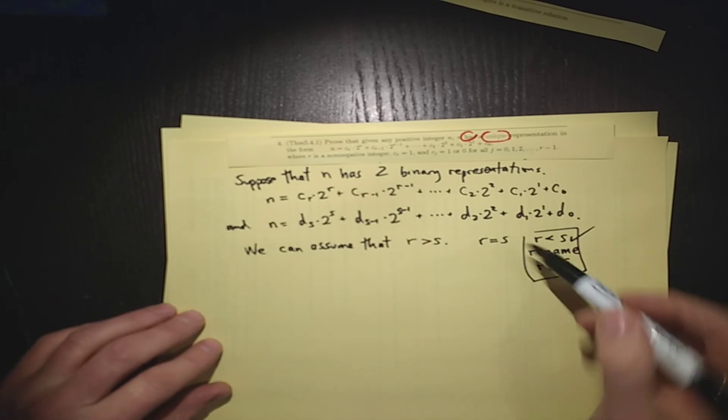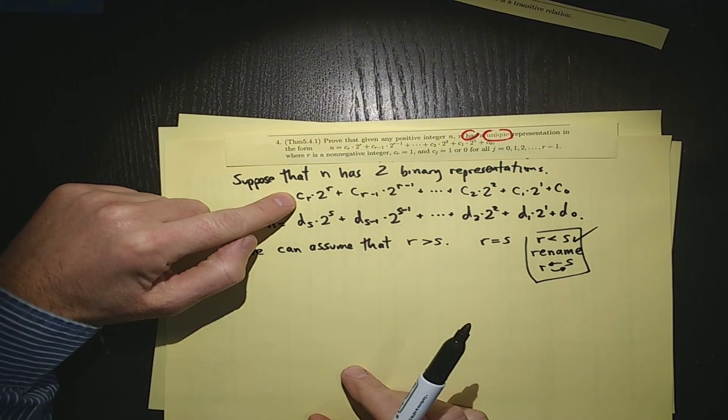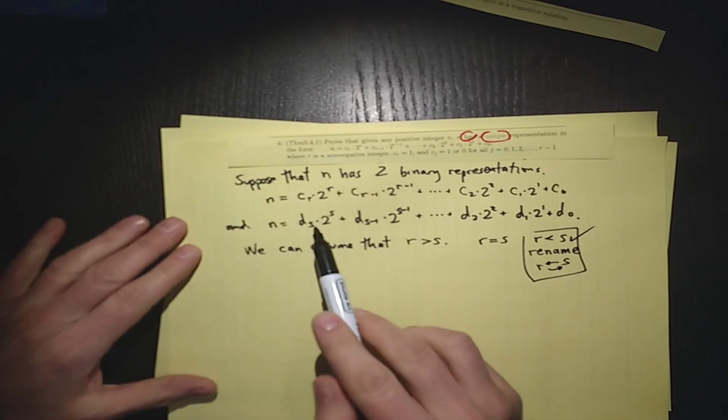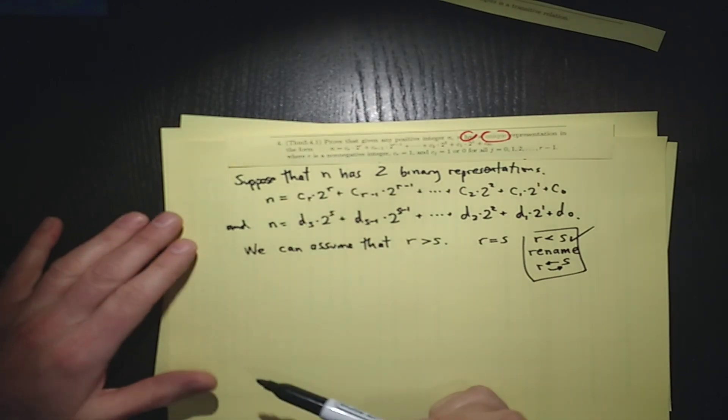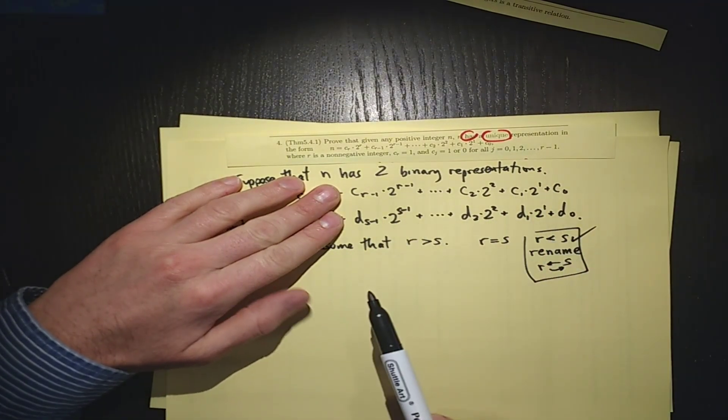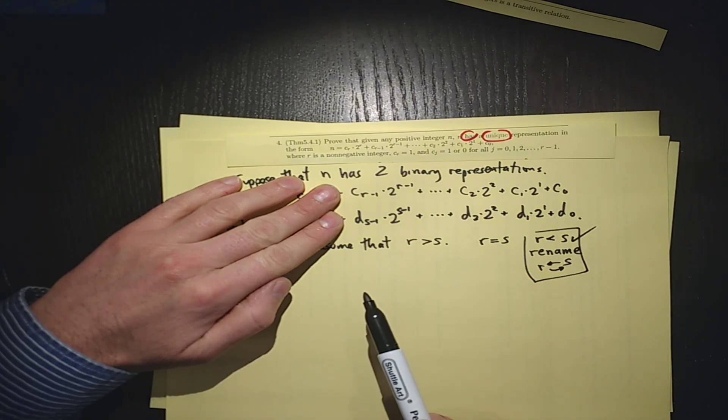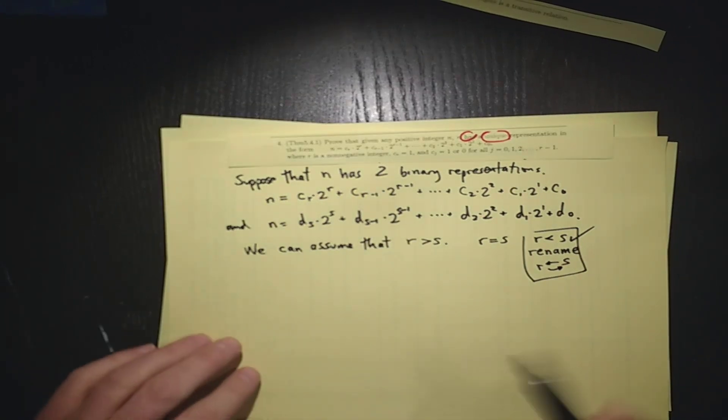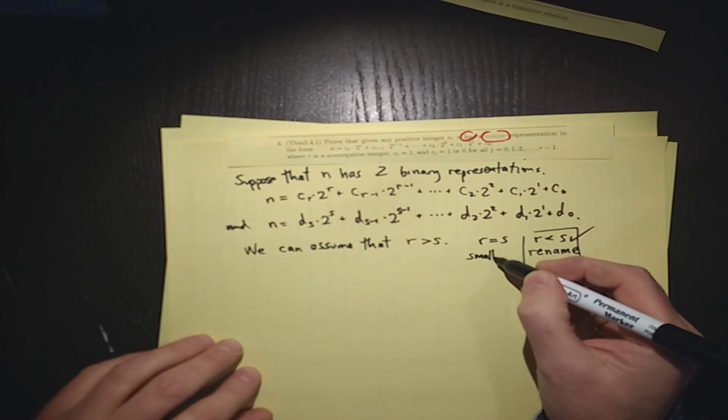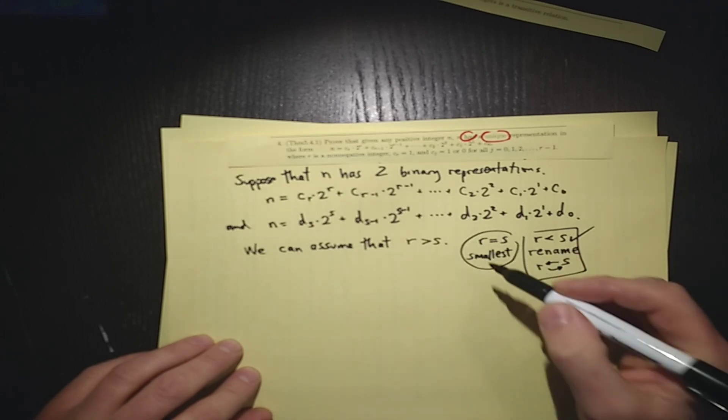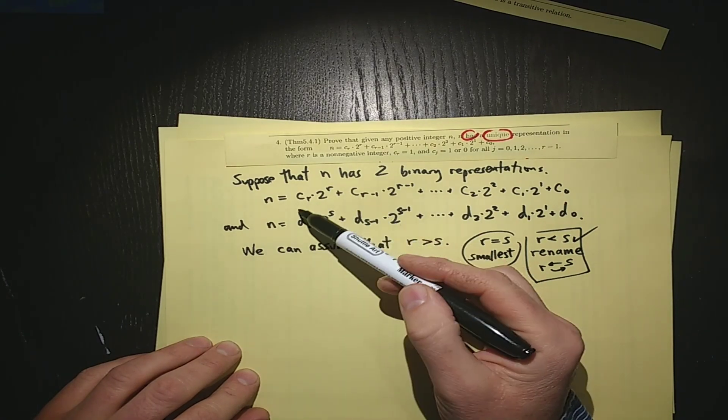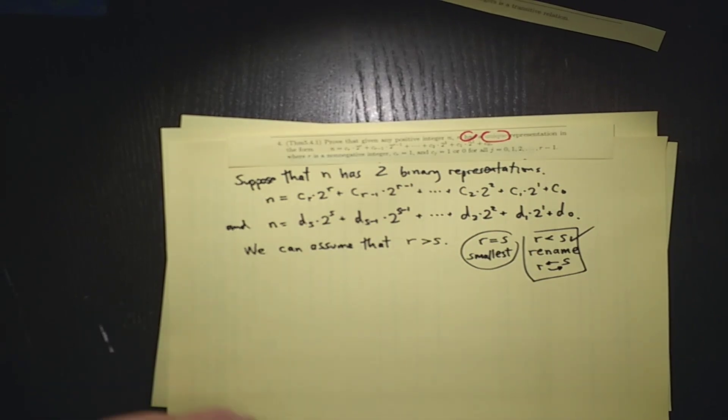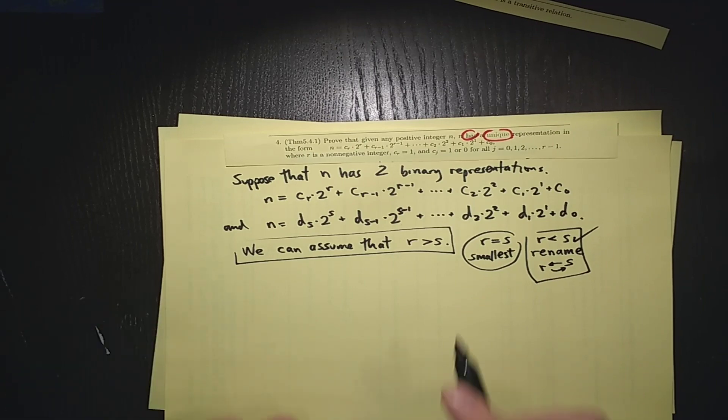But if r and s are equal, that means that cr is the leading coefficient, the leading term of n with this representation, and ds is the leading term here. Those are the same. We could just cancel these two terms, and we'd have two smaller binary representations of a smaller number. So n would not be the smallest positive integer with two binary representations. So r equals s, we could only consider the smallest. If r equals s, we can get rid of these two terms and have a smaller example of n that has two binary representations. So here's our running observation that r is greater than s.